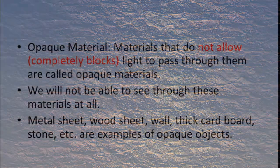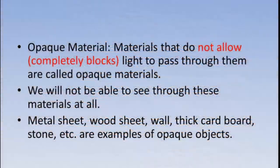Metal sheet, wood sheet, wall, thick cardboard, and stone are examples of opaque objects.